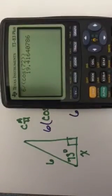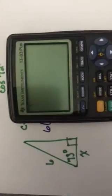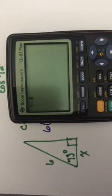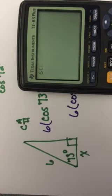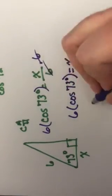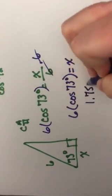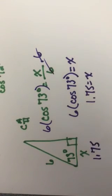Let's pull our calculator back up here, clear it out from our last problem. And I'm going to type in 6 parentheses. Cosine 73 degrees. Close on my parentheses. And I get 1.75, which means the length of this side here is 1.75.